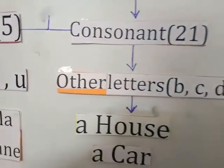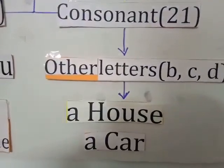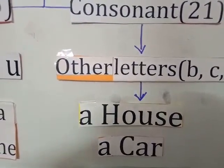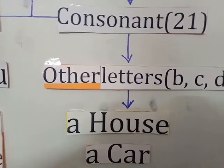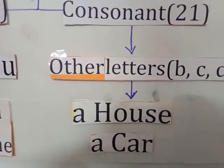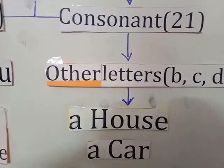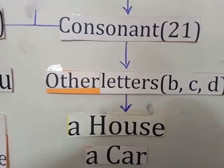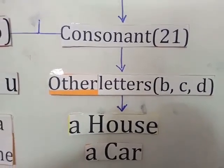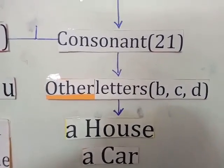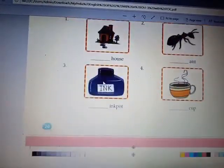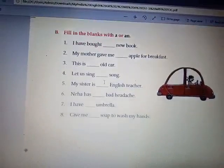For consonants — other letters — for example, house starts with H, which is a consonant, so we use A. Car starts with C, also a consonant, so we use A. A is used before a singular noun beginning with a consonant sound — such as B, C, D. Let's revise the exercise.